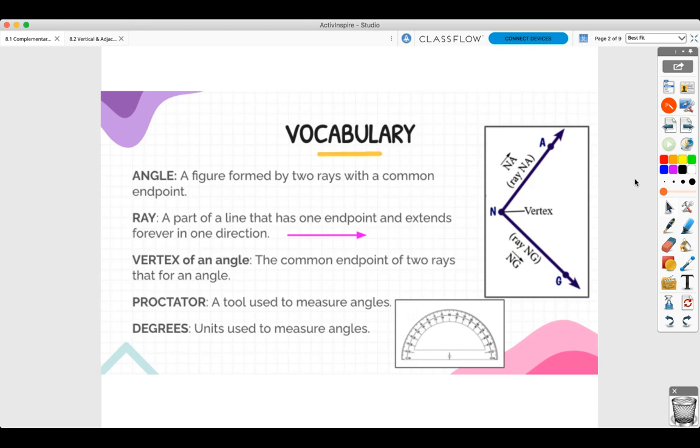So here's some base vocabulary. An angle is a figure formed by two rays with a common endpoint. So two rays with a common endpoint. So this is an angle.